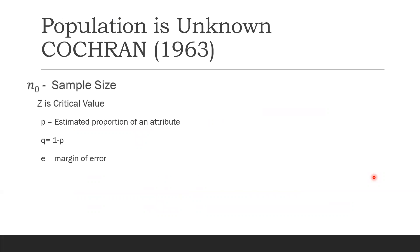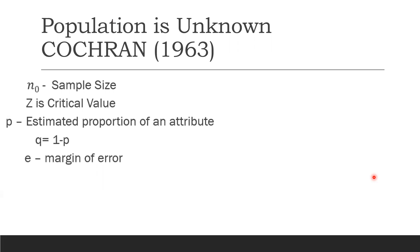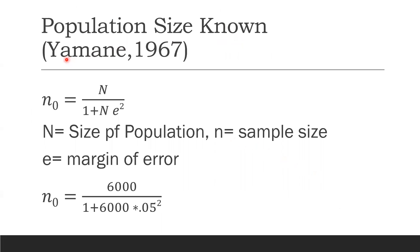Now when the population is known, we use the formula from Morgan (1967). The formula is: n₀ = N / (1 + N × e²), where N is the size of the population — because in this case we are aware of the population size — n₀ is the sample size, and e is the margin of error. Let's say my population size is 6,000 and I want to know what the adequate sample size should be.